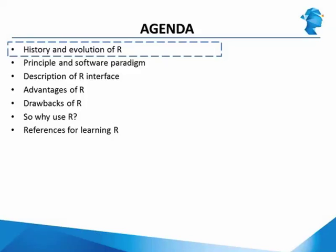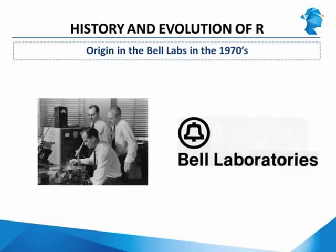We'll start with the first point on the agenda: the history and evolution of R. The origin of R can be traced back to the 1970s at Bell Labs. In the mid-1970s, an American team at Bell Labs — one of the most prestigious research organizations at the time — was not satisfied with the available software and decided to develop a language they called S to meet their needs.